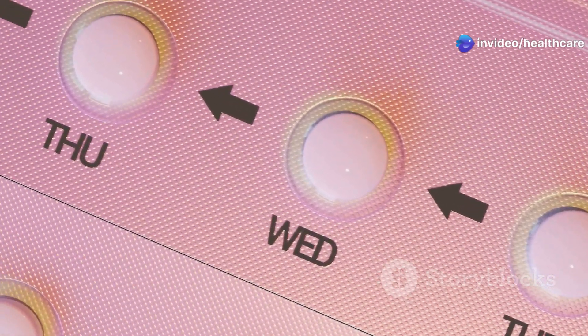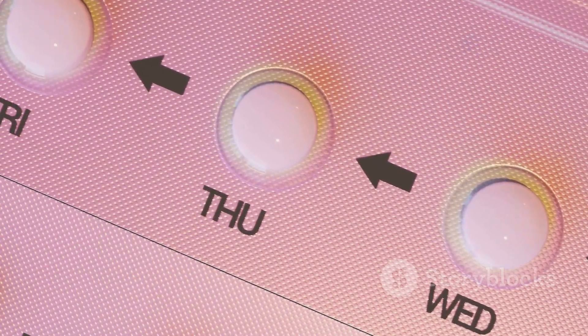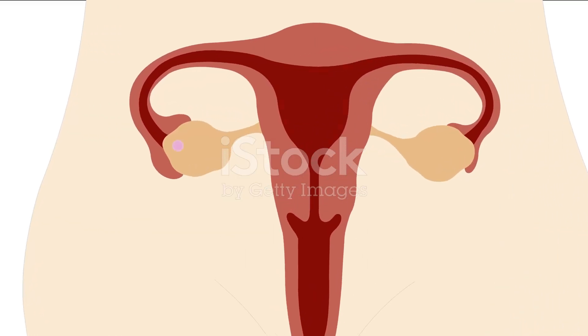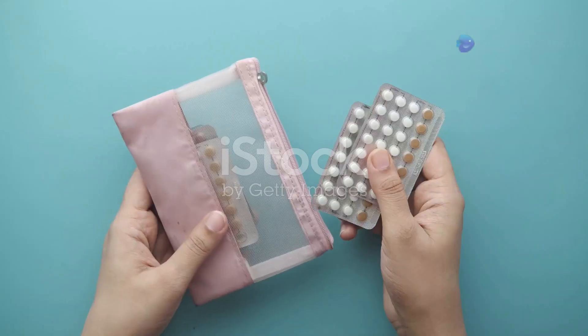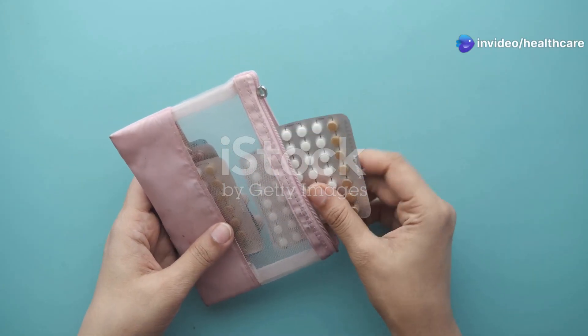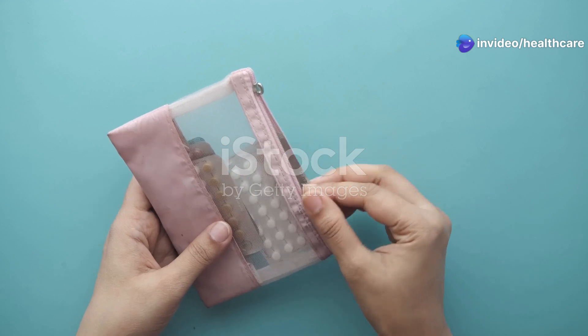Contraceptives, particularly hormonal birth control, work by preventing ovulation. They alter the hormonal balance to inhibit the release of an egg. While effective for preventing pregnancy, it's important to understand how they affect your menstrual cycle and overall reproductive health. Always discuss with your healthcare provider to choose the method that's right for you.